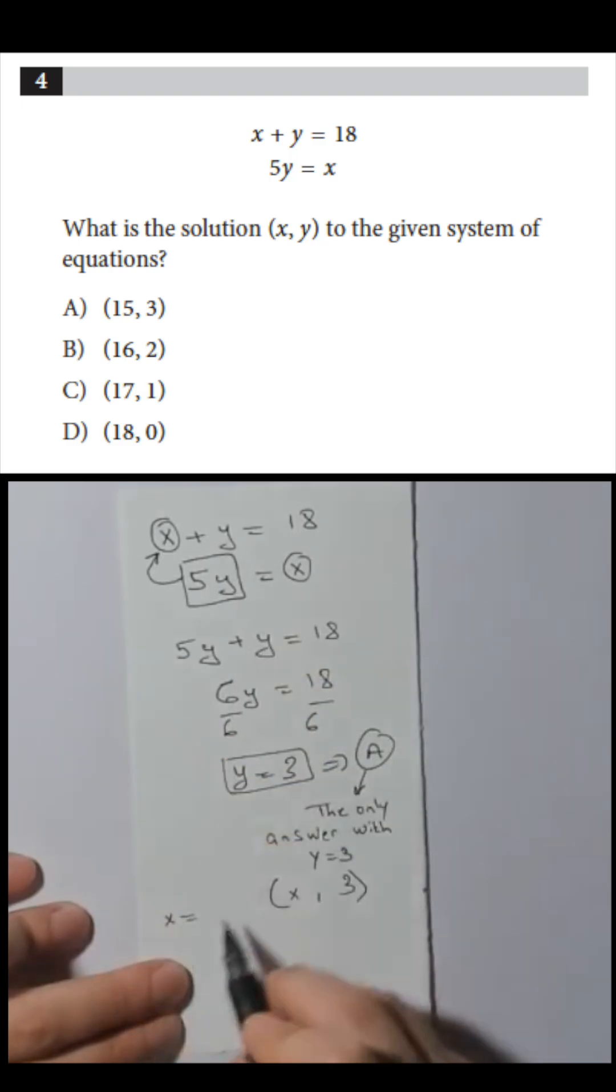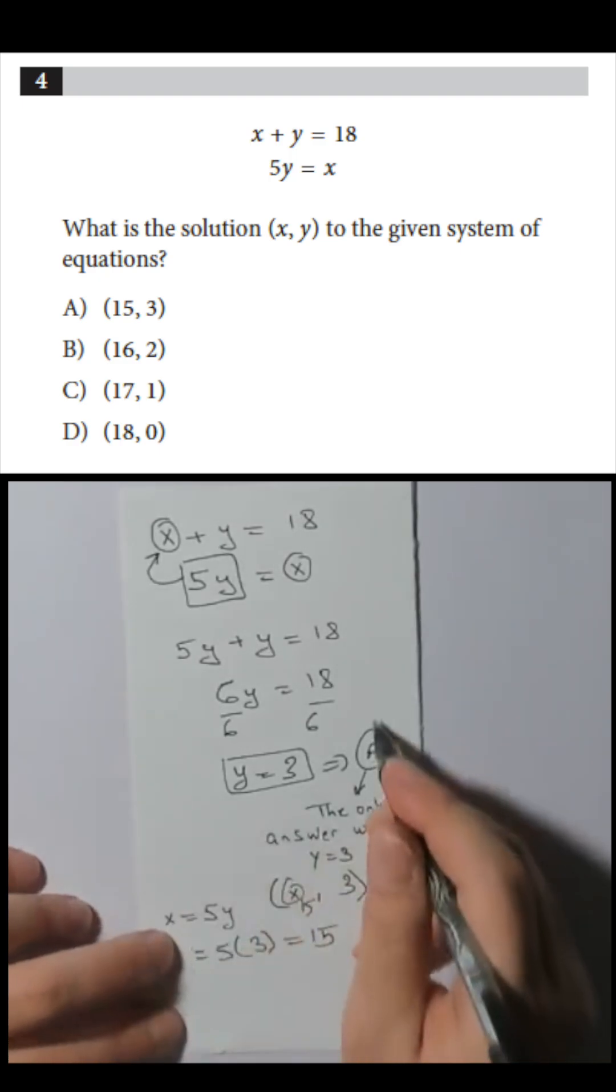But for the sake of practice, let's find x. Take the second equation: x equals 5y. y is 3. 5 times 3 is 15. This is a double check that x equals 15.